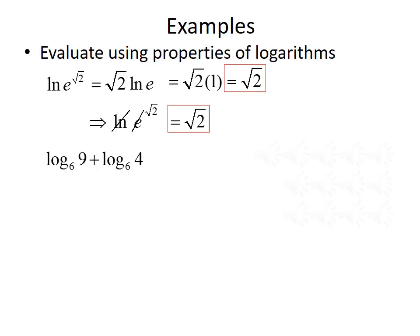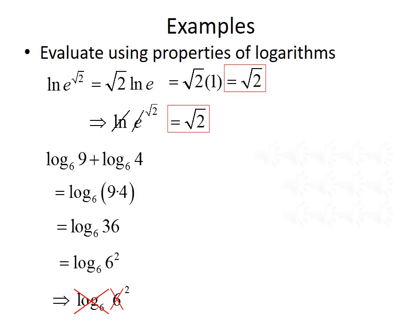For a second example, we evaluate log base 6 of 9 plus log base 6 of 4. Using the multiplication property, we combine them into log base 6 of 9 times 4. Evaluating 9 times 4 gives us 36, and we can rewrite 36 as 6 squared. Now the logarithm and exponential have the same base, so they cancel, leaving us with the exponent — an answer of 2.